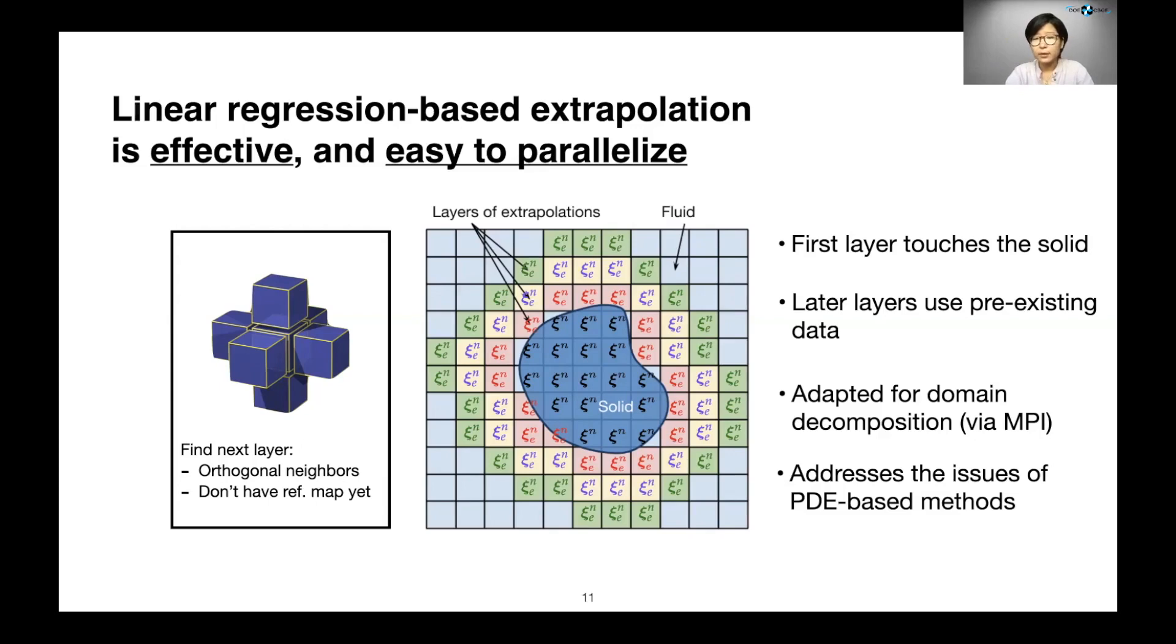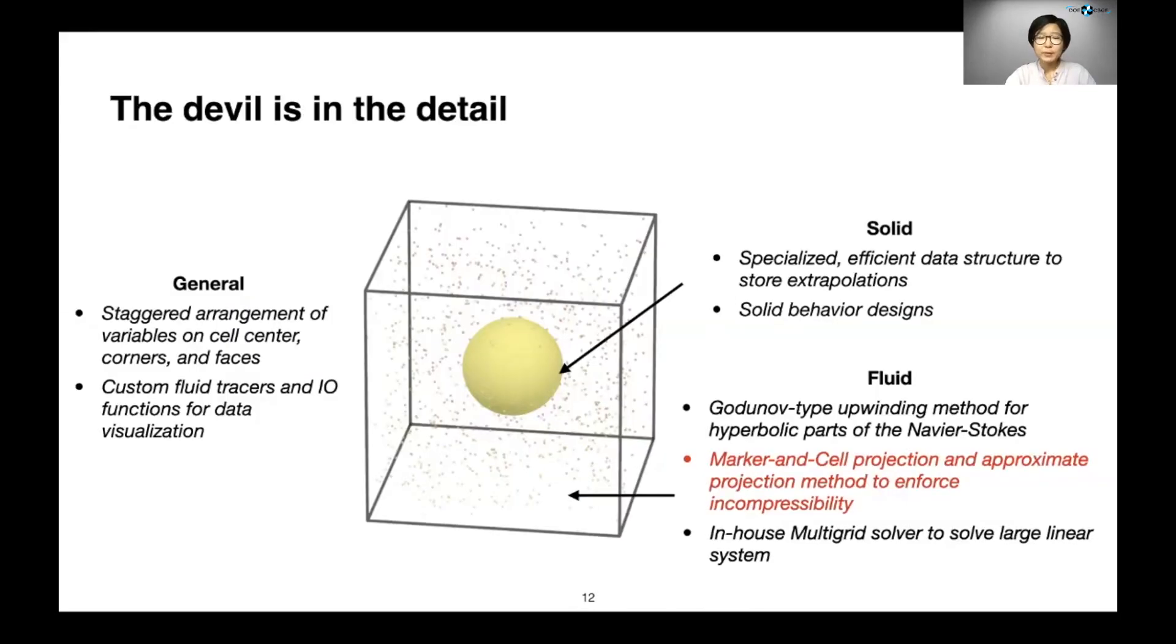And another issue in PDE-based methods is that some of the fluctuations at the interface can grow over time and cause instabilities. But linear regression is a smoothing operation. So even if we have some fluctuations in the underlying field around the interface, that can be smoothed out over time. By now I have told you about some of the must-know aspects of reference map technique, but the devil is always in the detail.